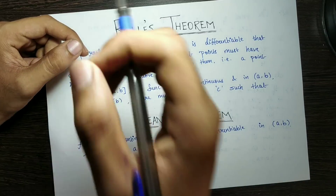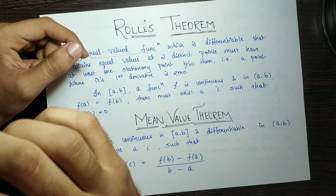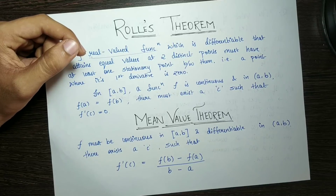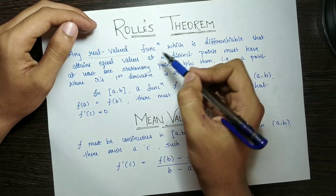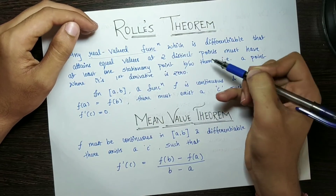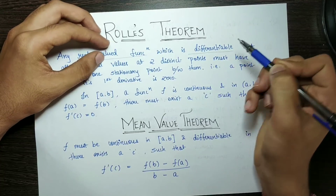Real numbers include all rational and irrational numbers, as opposed to complex numbers. A real-valued function which is differentiable means the derivative exists at every point — there are no break points or sharp edges.